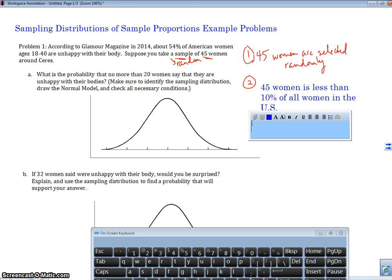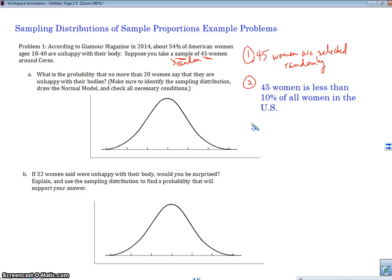Well, number three, what's our third condition? Our third condition is NP and NQ. Our number of successes and our number of failures. So let's go ahead and calculate that out. N is going to be 45. So NP is 45 times 0.54. So P equals 0.54. And that is 24.3.